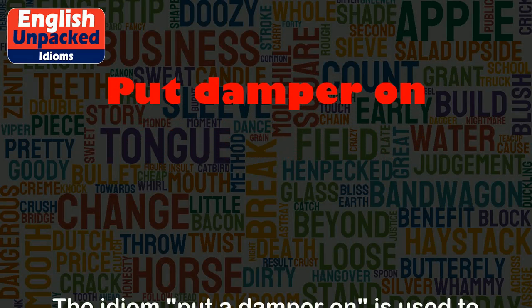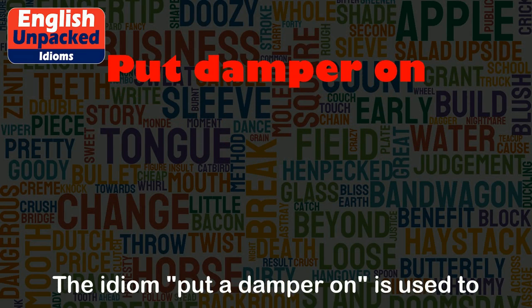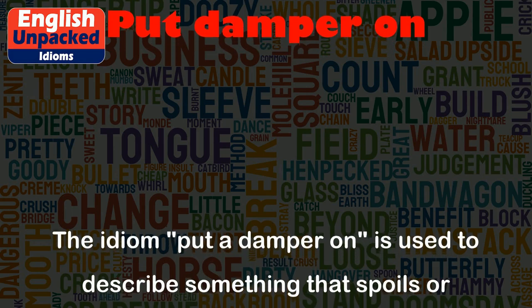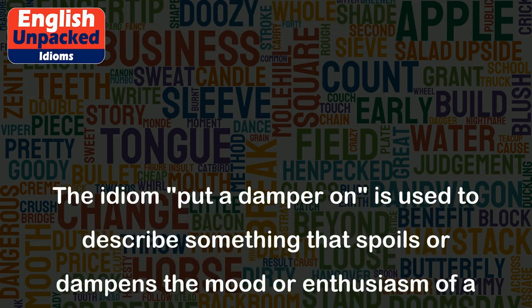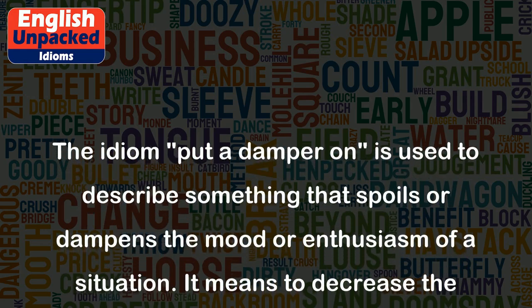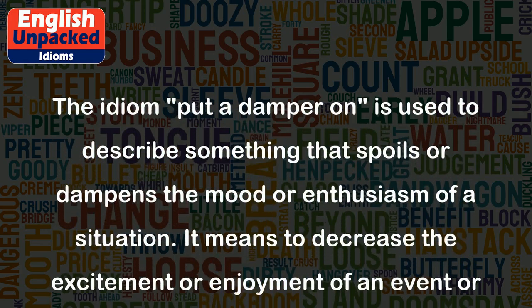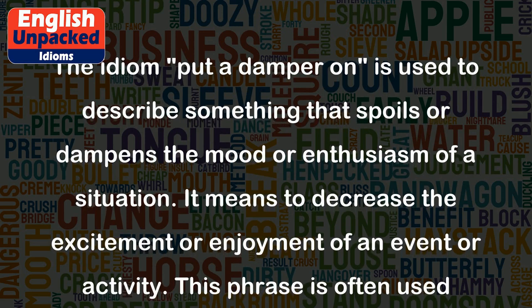Put a damper on. The idiom 'put a damper on' is used to describe something that spoils or dampens the mood or enthusiasm of a situation. It means to decrease the excitement or enjoyment of an event or activity. This phrase is often used when something negative or disappointing happens, causing a decrease in the overall atmosphere or enthusiasm.